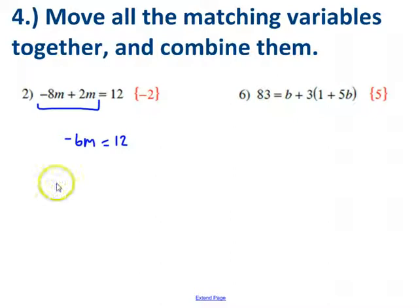I've got negative six of these things called m, and it's equal to twelve. To get m by itself and figure out what m is, I've got to divide away that negative six.